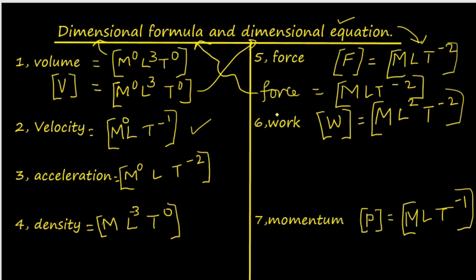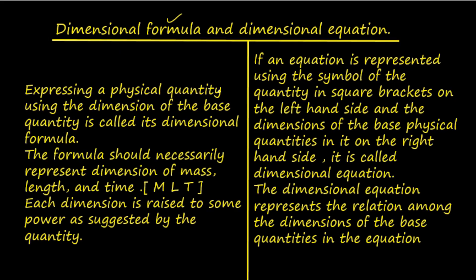To summarize: expressing a physical quantity using the dimensions of the base quantities is called its dimensional formula. The formula must represent dimensions of mass, length, and time in the order M, L, T, each raised to a power as suggested by the quantity. A dimensional equation represents the relation among dimensions using the symbol of the quantity in square brackets on the left-hand side. Remember: dimension is not magnitude.